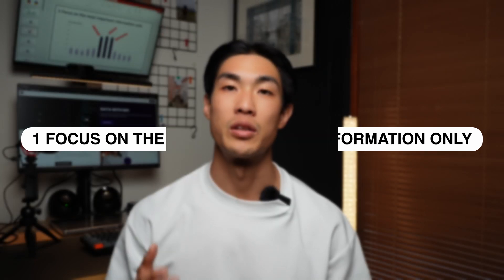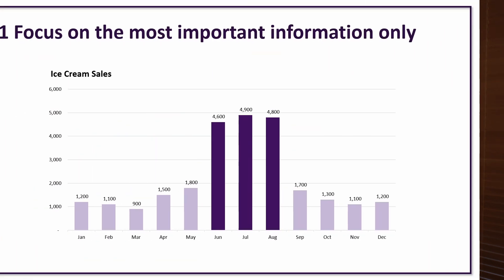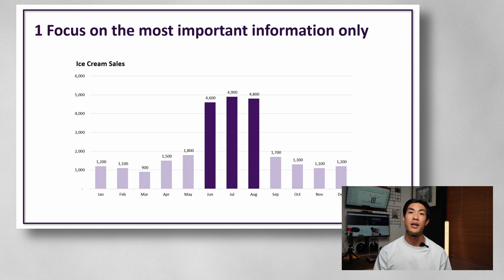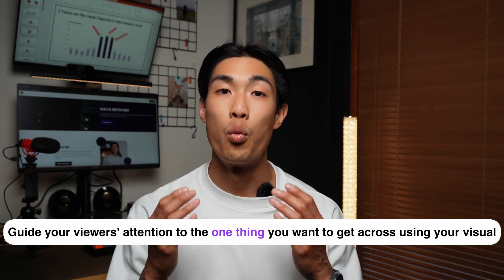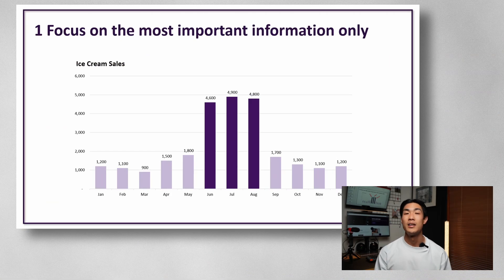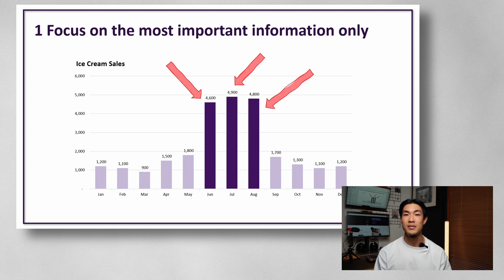Tip number one would be to focus on the most important information only. Ideally, you'd have one key point per visual, whether it's a table, chart, or a graph. Our brains naturally look for patterns and are great at identifying anything that stands out. You want to make sure you utilize this bit of human behavior to guide your viewers' attention to the one thing you want to get across using your visual, which in this case would be the fact that having an ice cream shop is clearly a seasonal business with the summer months producing the best sales figures.